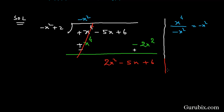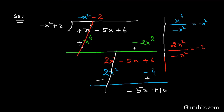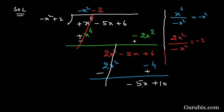Now to find the next term in the quotient, we divide 2x squared by the first term of the divisor, minus x squared, giving us minus 2. So the next term in the quotient is minus 2. Multiplying minus 2 by minus x squared plus 2 gives us positive 2x squared minus 4. We change the sign of these terms; these two terms cancel, and here we have minus 5x plus positive 10. This is the remainder.